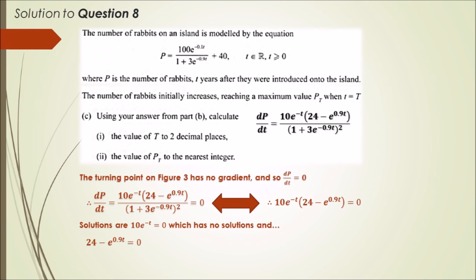Taking the second solution, 24 minus e^(0.9t) equals zero. Doing quick algebra, crossing over the exponential, then taking logs and dividing by 0.9, should give us ln(24)/0.9. Friends, this should give you 3.53 years. Plugging in the value of T into the original P equation should give us roughly 102.